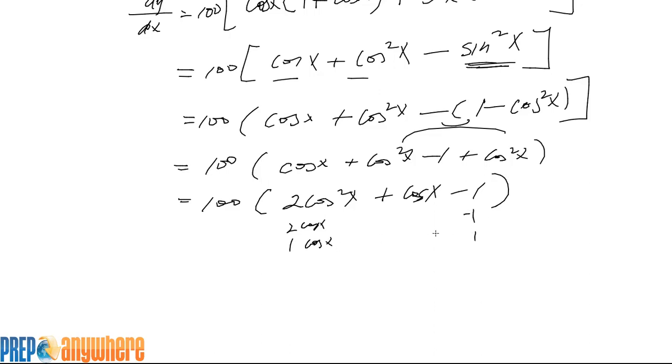We get 100 times 2 cosine of x minus 1 times cosine of x plus 1.